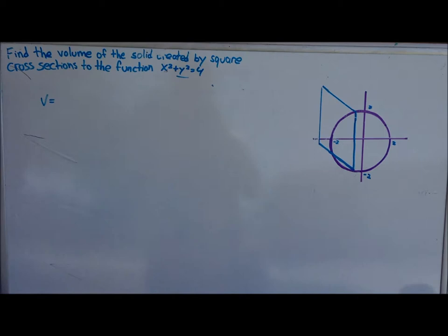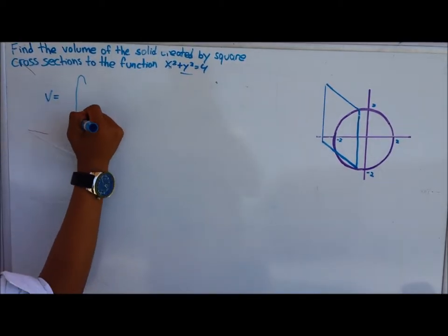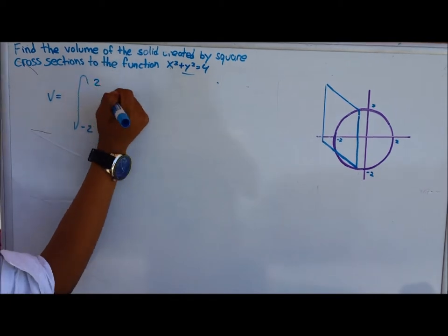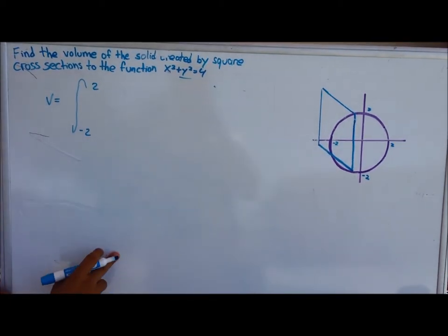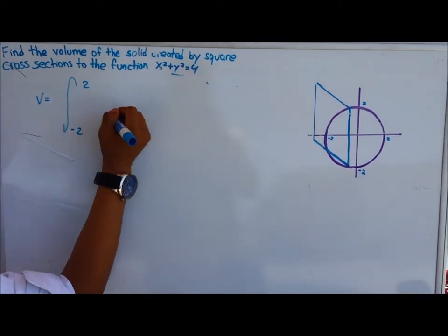So to find the volume of the solid created by the square cross section, you have to take the integral from negative 2 to 2, which are the boundaries of the circle.